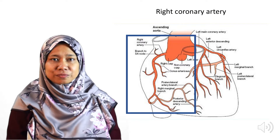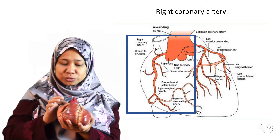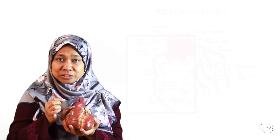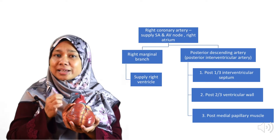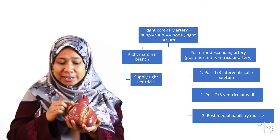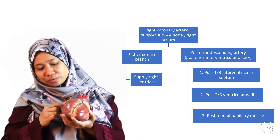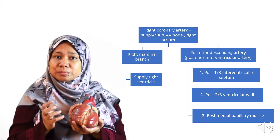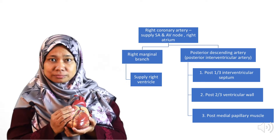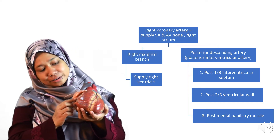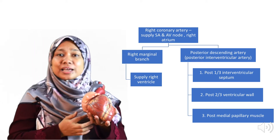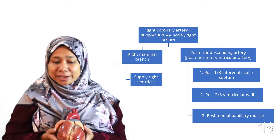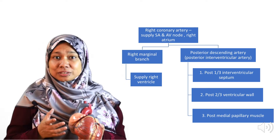The right coronary artery arises just above the right cusp of the aortic valve. It travels forward and gives rise to a small branch to the SA node, supplying our pacemaker. It then travels forward and downward, giving a branch to the right marginal branch, which supplies the right ventricle. Another branch travels posteriorly and becomes the posterior descending artery.